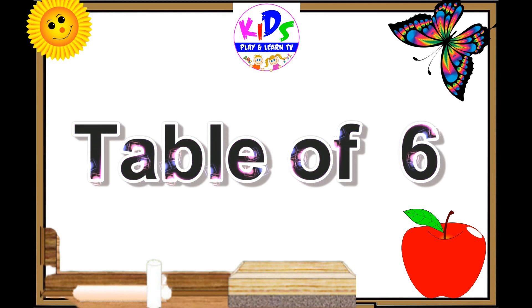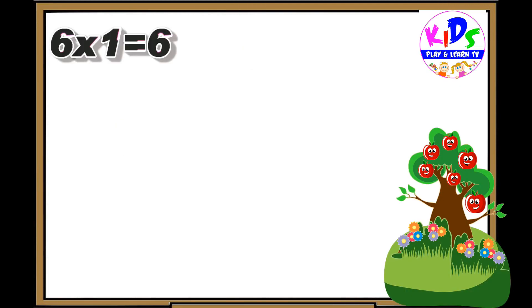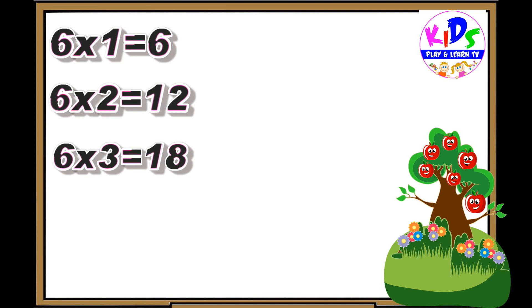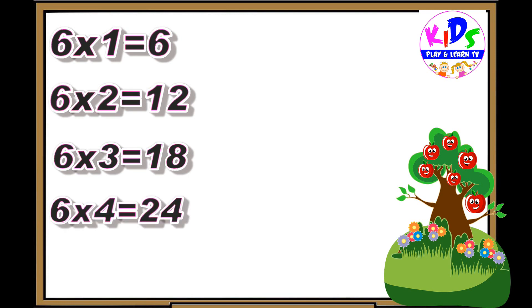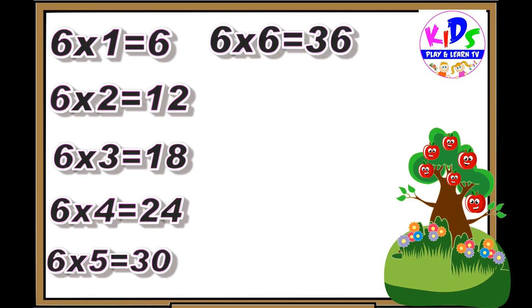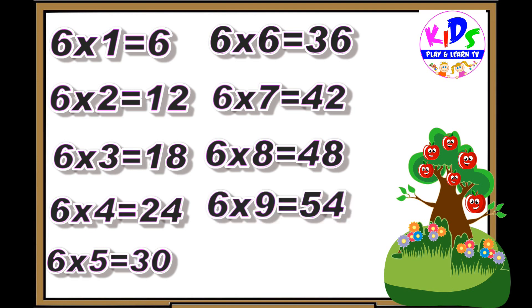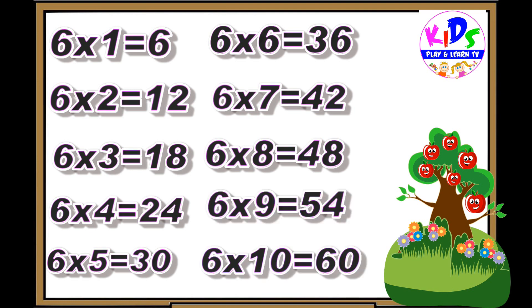Hey kids, let's repeat. Six ones are six, six twos are twelve, six threes are eighteen, six fours are twenty-four, six fives are thirty, six sixes are thirty-six, six sevens are forty-two, six eights are forty-eight, six nines are fifty-four, six tens are sixty.